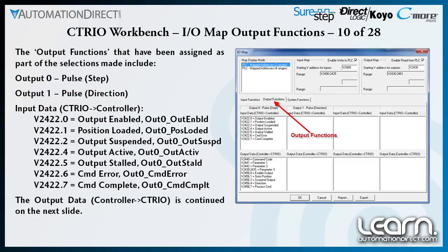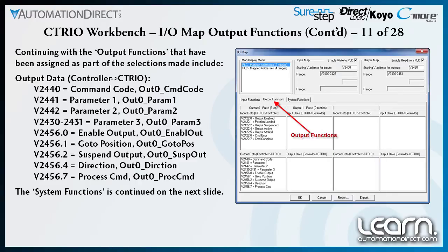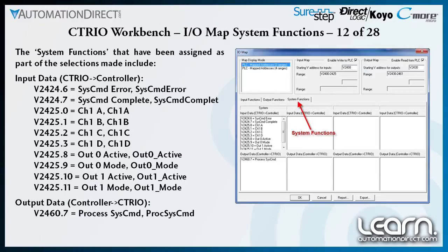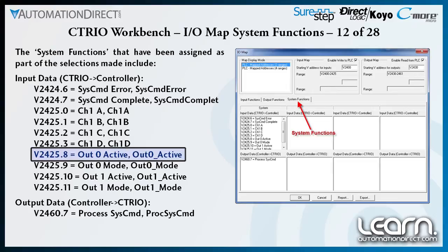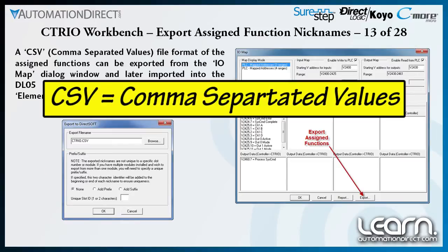Under input data are the various bit signals that the CTRIO communicates to the DL05 PLC controller. The system functions assigned can also be seen. I have used the bit signals in my ladder logic to indicate when channel 1 input terminal C, designated as V2425.2, is true for my homing signal, and I also used the output 0 active bit, designated as V2425.8, to indicate when a move is no longer active. As a time saver, I can export the assigned functions as a comma separated values file, type CSV, from the IOMAP dialog window.